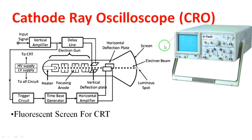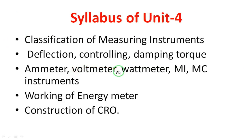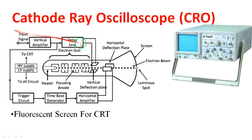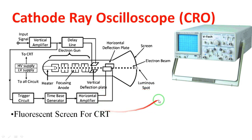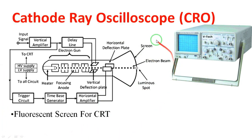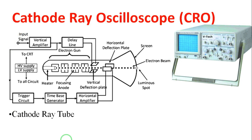In old CRT TVs, you can see the beam forming a spot. This beam spot is connected to the signal. If noise is introduced, it will not be connected to the signal channel. This is completely about the CRT — Cathode Ray Oscilloscope. If you have any doubts, please comment. Thank you very much. This is the overall CRT view.